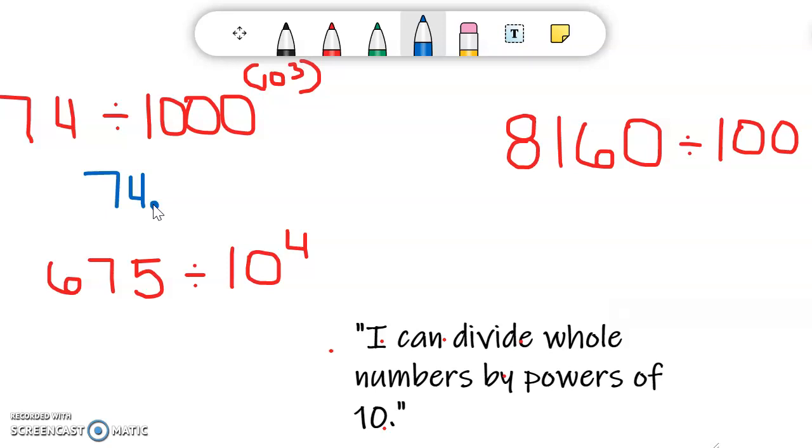And to decrease the value of the 74, we move the decimal point to the left as many places as there are zeros. So we have three zeros, so we're going to move the decimal point to the left three spaces. So that's one, two, and three.